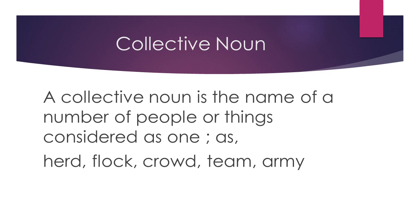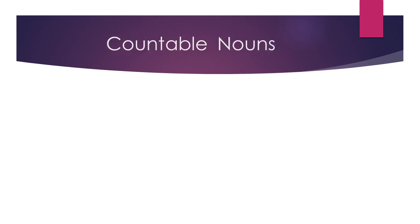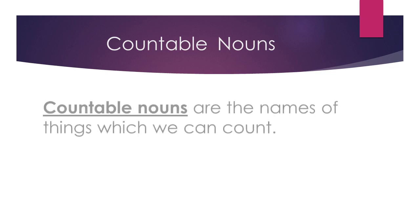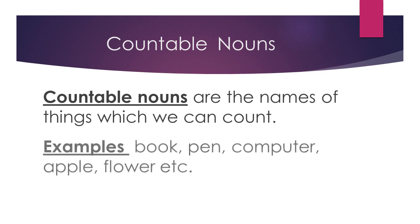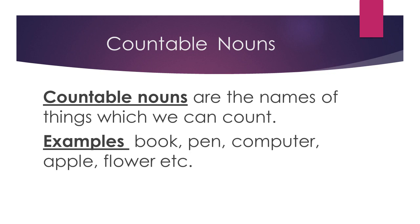This is the name of a number of people. These are things which can easily be counted, so these are known as countable nouns. In other words, when we get the answer to 'how many,' those nouns are known as countable nouns.